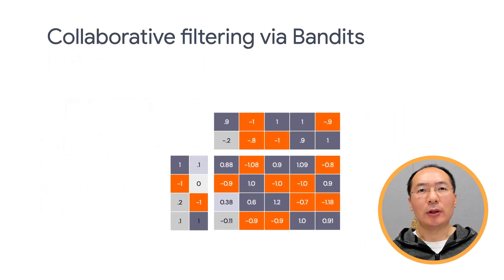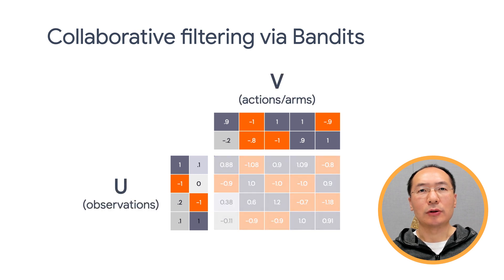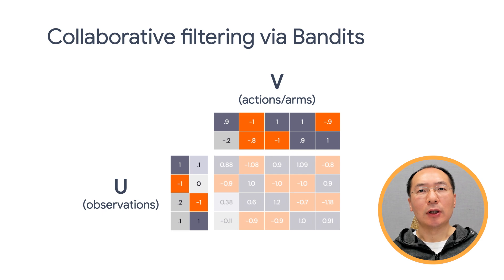Now, if we take the perspective of multi-armed Bandits, the rows of U are context features, and the movies to be recommended to the users are the set of actions, represented as the rows of V transpose. The reward for recommending movie J to user I can then be calculated as the inner product of the corresponding rows of U and V. Therefore, using the low-rank SVD decomposition to compute the rewards gives us the ability to approximate the reward even for movies that were not recommended to the users.